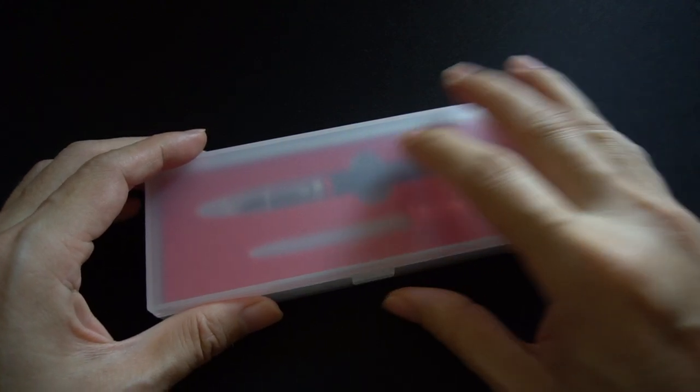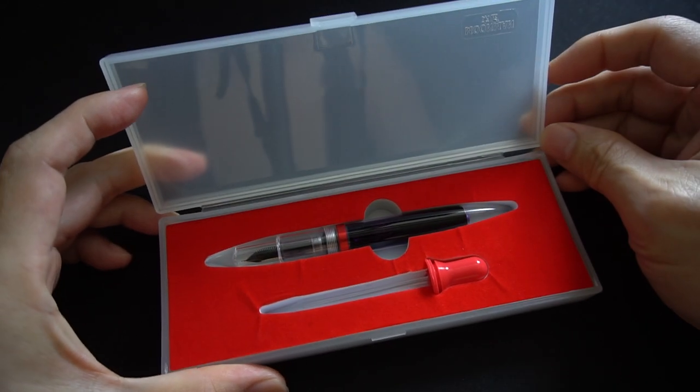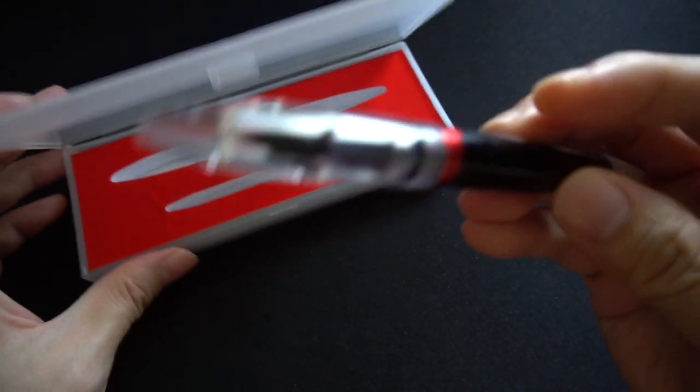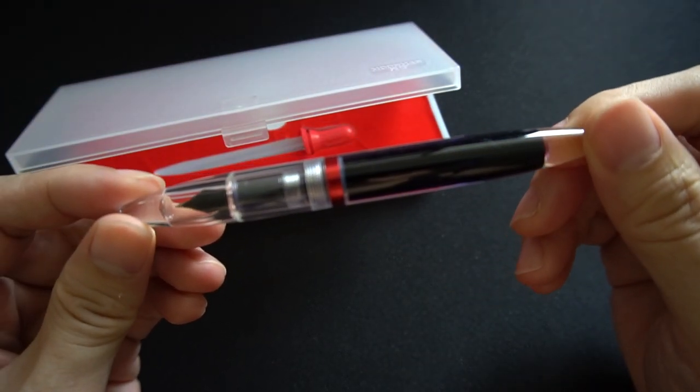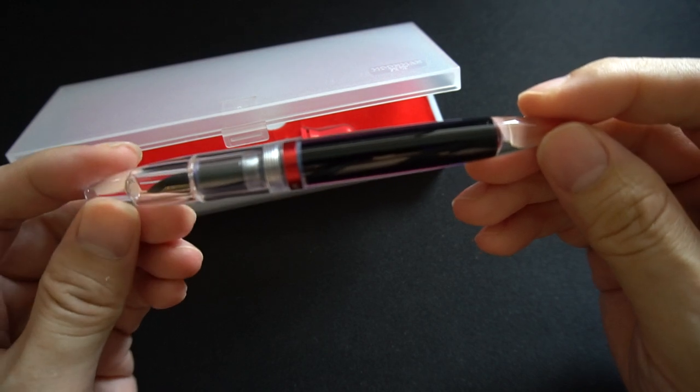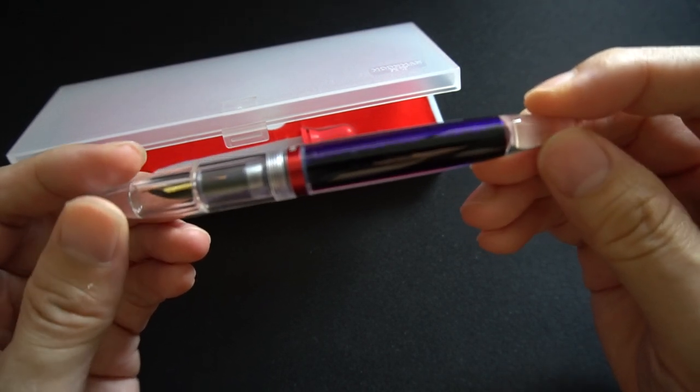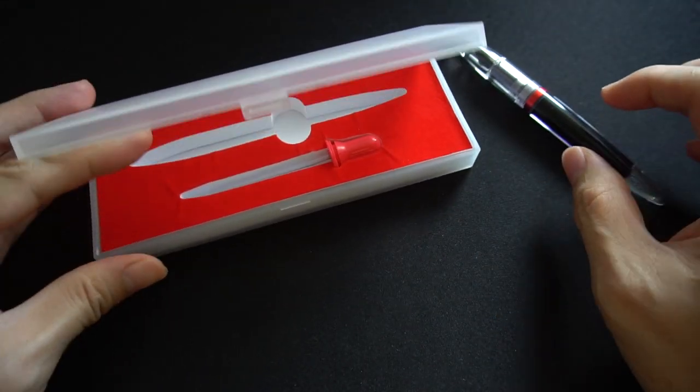This is the Moonman M2 as it comes in a box. It doesn't come with the ink - I've just loaded it with Diamine Winter Miracles sparkling ink.